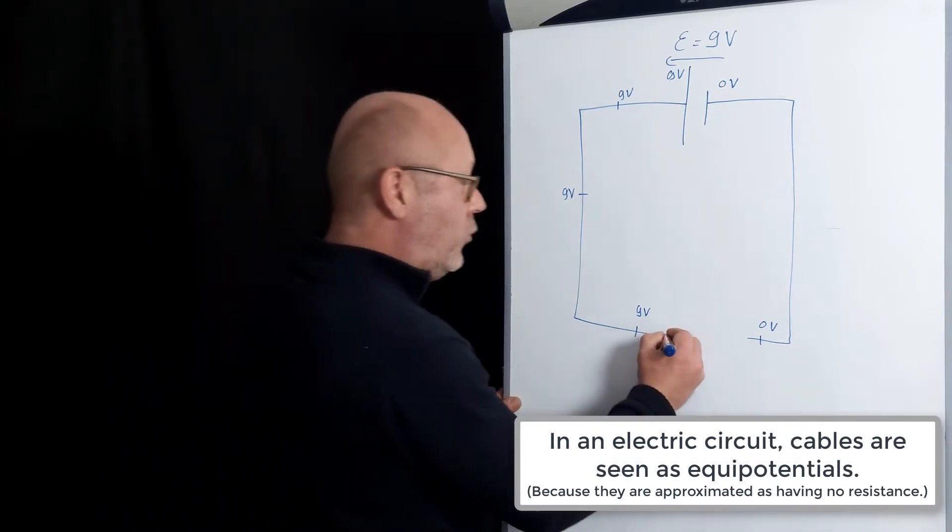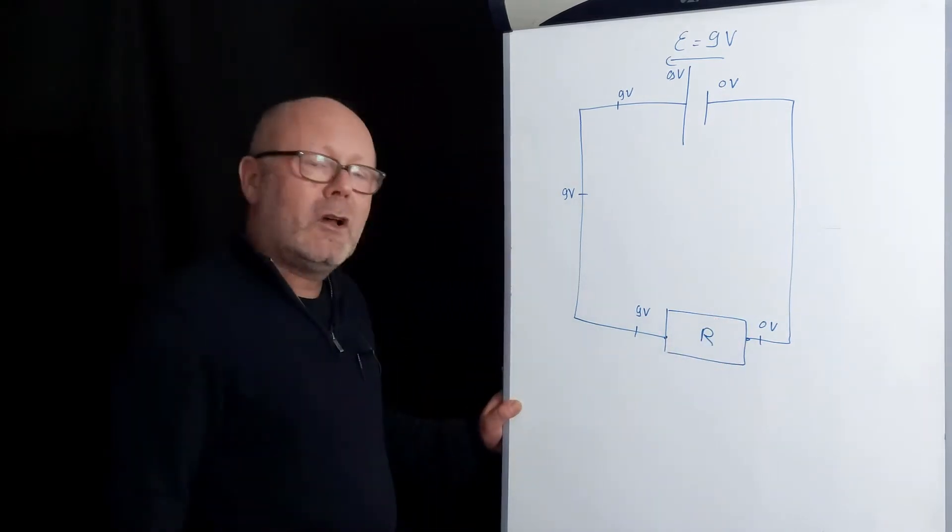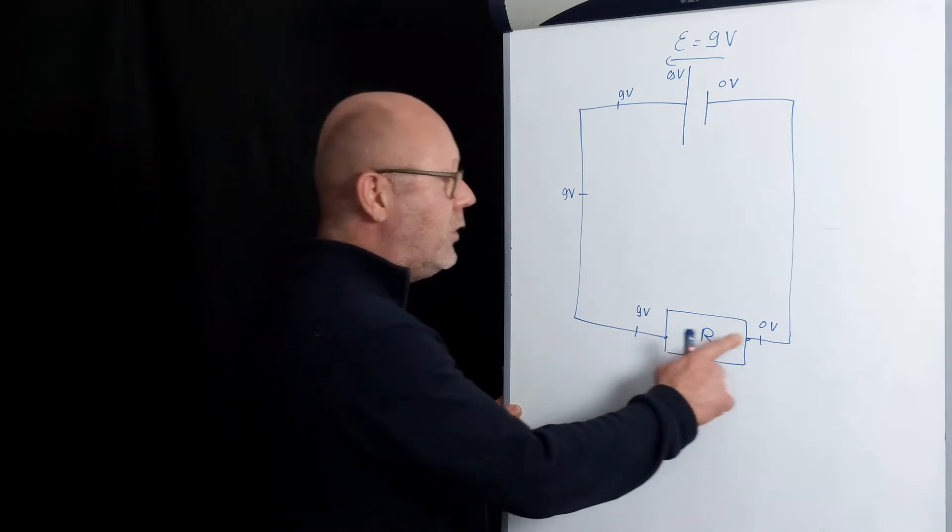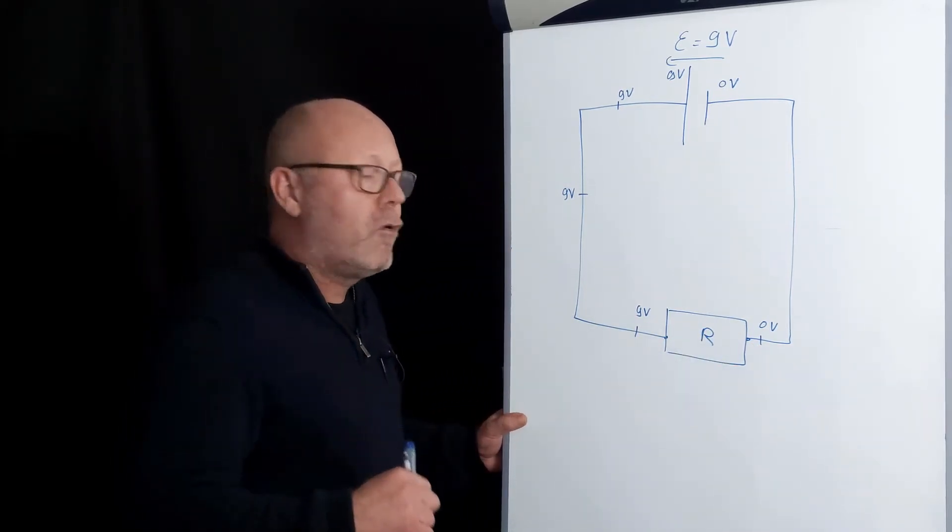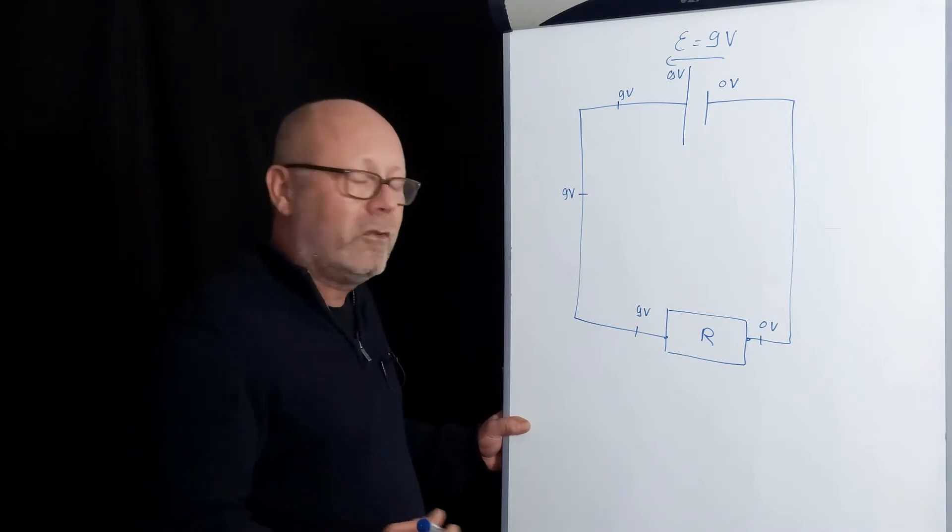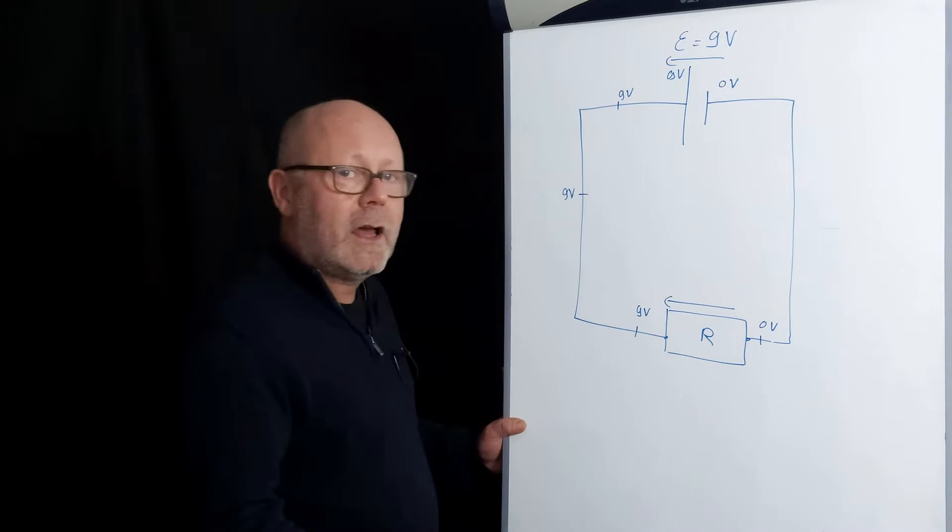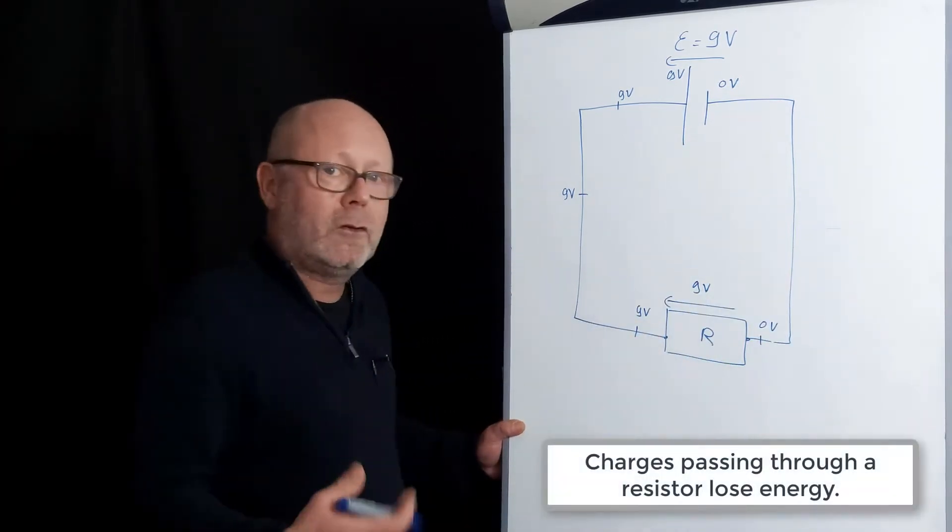We say that the cables are equipotentials. Okay, between these two points, let's draw now a resistor. What do you notice? Is that you have a 9V potential here and a 0V potential there. Meaning there is a potential drop across a resistor of 9V.